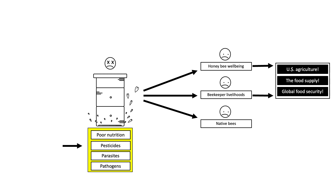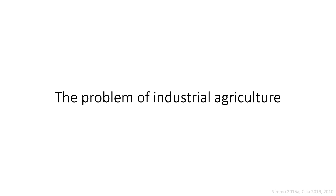What changes when we change the way we frame this problem? What happens if, when we talk about honeybee disease and colony loss, we start with the problem of industrial agriculture? The problem of industrial agriculture — also known as intensive, conventional, or modern agriculture — is vast, unwieldy, and inextricably connected to destructive, capitalist, and colonial projects. For the purpose of this video, I will focus on one aspect of this problem: the way industrial agriculture impacts honeybee health.